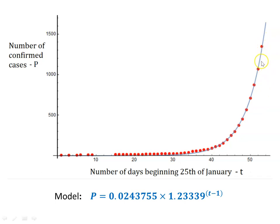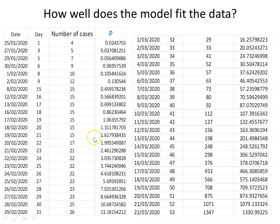The red dots represent the actual data collected by the government in Australia — the actual numbers of confirmed cases. The blue line represents the mathematical model which can be used reasonably well to describe how this epidemic is growing.